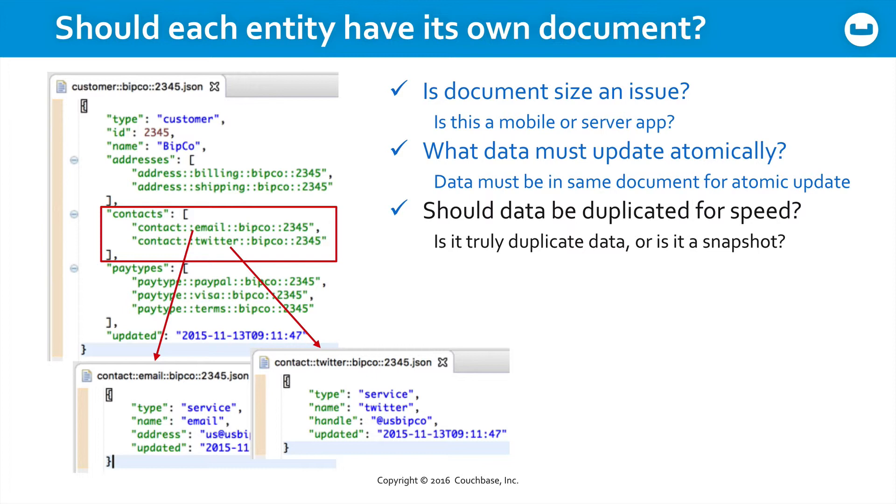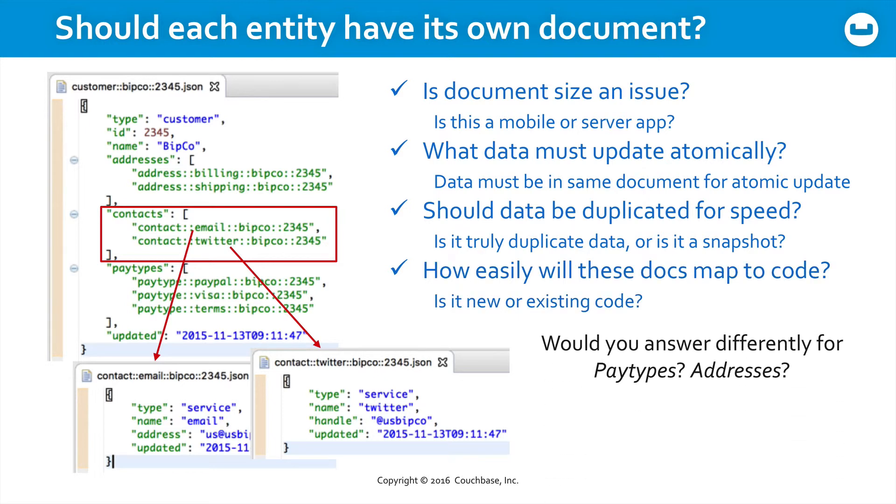Or maybe it's not actually duplicate data, but a snapshot of an internal document that you would then timestamp because you're recording the state of the data at a particular point in time. How easily are each of these documents going to map into your code base? Again, is it new or existing code? How would you answer these questions differently if we were talking about pay types or addresses? What about products in an items array in a given order? Why would you answer these questions differently? That's what we want you to think about here.